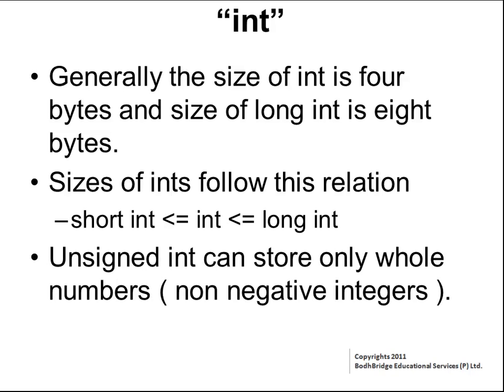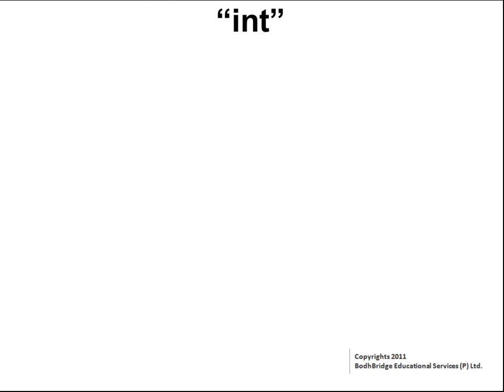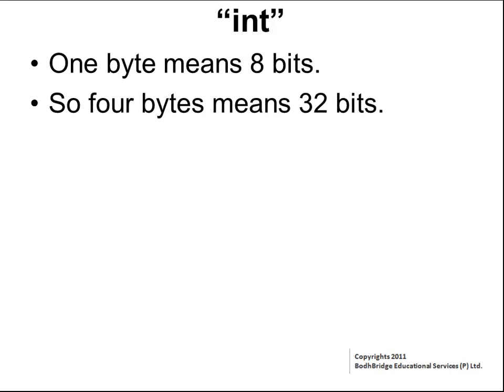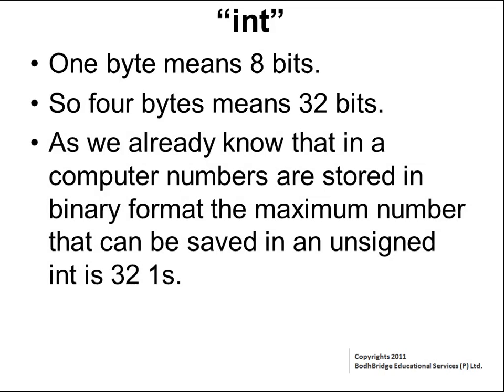Unsigned integers can store only whole numbers, i.e. non-negative integers — numbers greater than or equal to 0. One byte means 8 bits, and each bit can save either a 0 or a 1. So 4 bytes means 32 bits, meaning there can be at most 32 ones, which is the largest number representable using 32 bits. As numbers are stored in binary format, the maximum number that can be saved in an unsigned integer is 2 to the power of 32 minus 1.